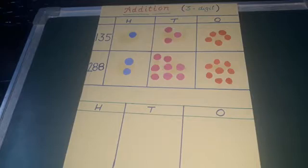So here you can see two three digit numbers. First number is 135 and the second one is 288. We'll add them.